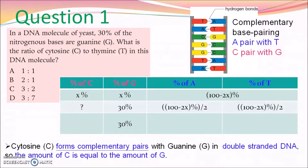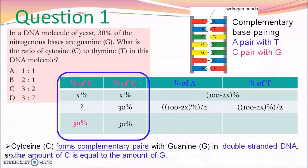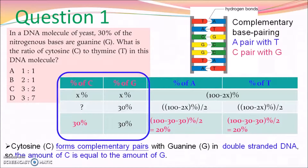The statement reminds us that cytosine forms complementary base pairs with guanine in the double-strand DNA. So the amount of C — that means cytosine — is equal to the amount of guanine. We can know that cytosine is 30%, the same as guanine. Then we use 100% to subtract the percentage of C and G, giving 40% for A and T in total. Since A forms complementary pairs with T, the amount of A equals T, so T is 20%. Finally, the ratio of C to T is 30% to 20%, which is 3 to 2. So the answer is C.